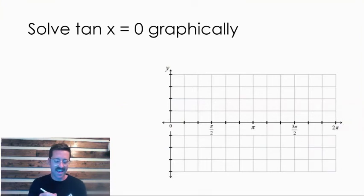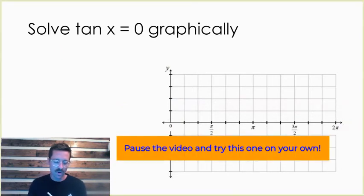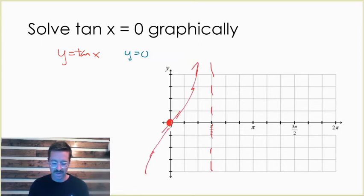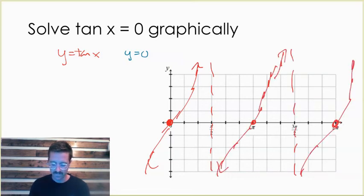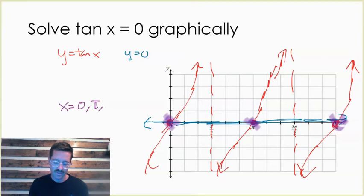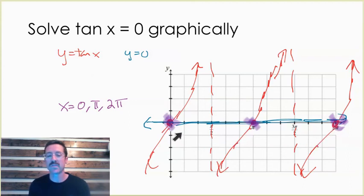Let's do one last one: where is tan x equal to zero? I'll graph y equals tan x and also y equals zero. The graph of y equals tan x has a zero at x equals zero, then repeats with another zero at pi and another zero at two pi. Graphing y equals zero is just a horizontal line through zero, and on this portion of the graph we can see three solutions: x equals zero, x equals pi, and x equals two pi.